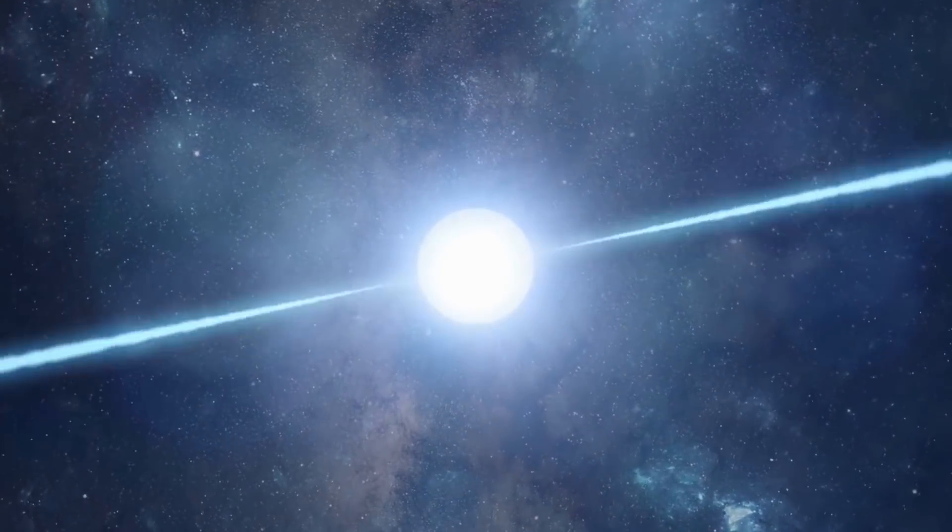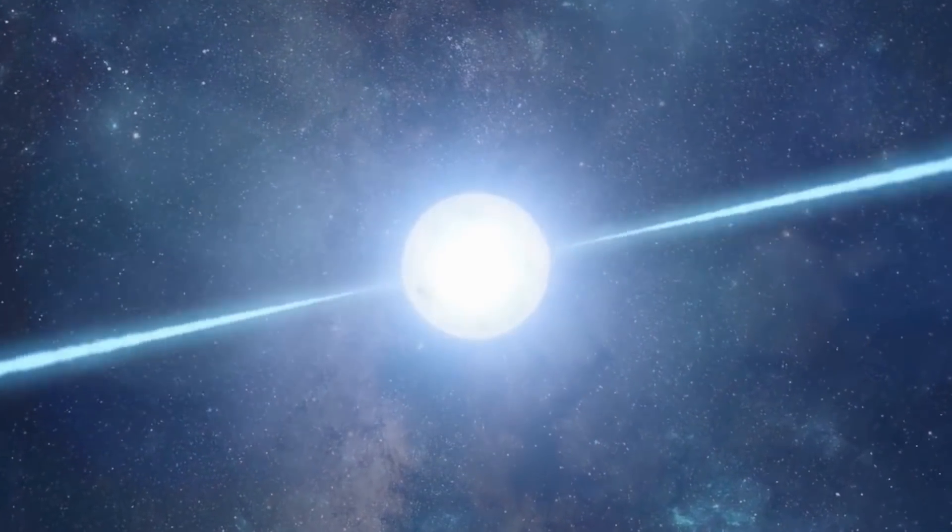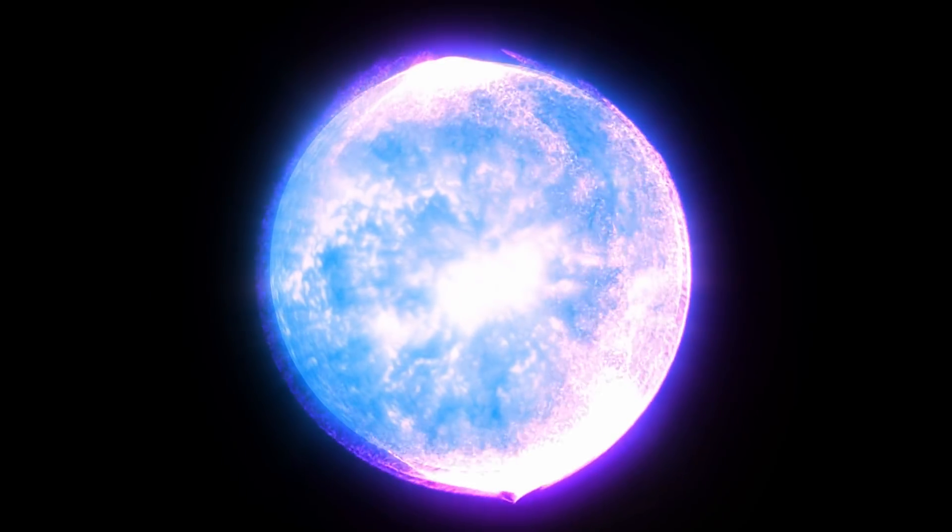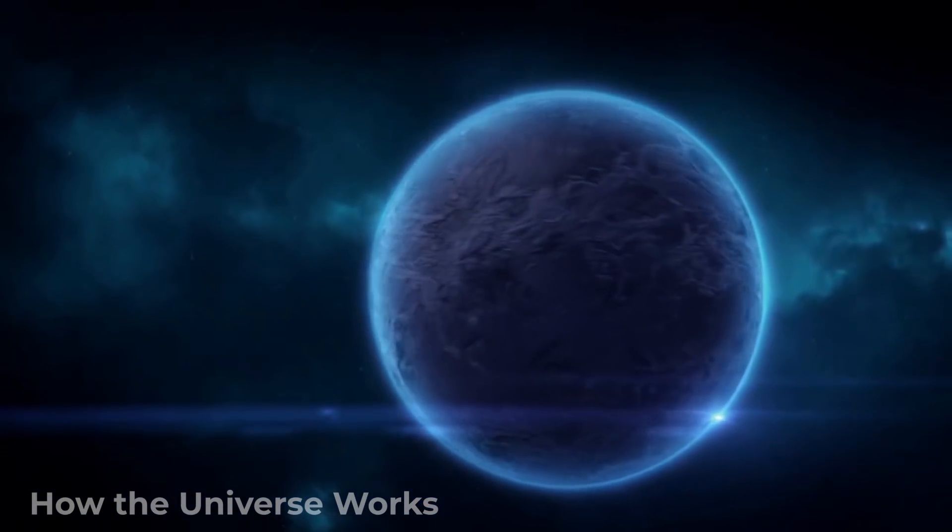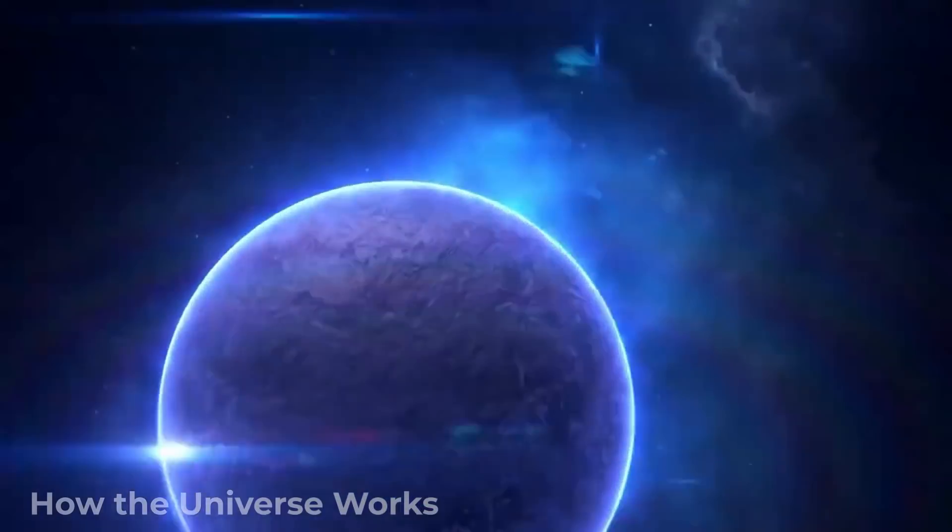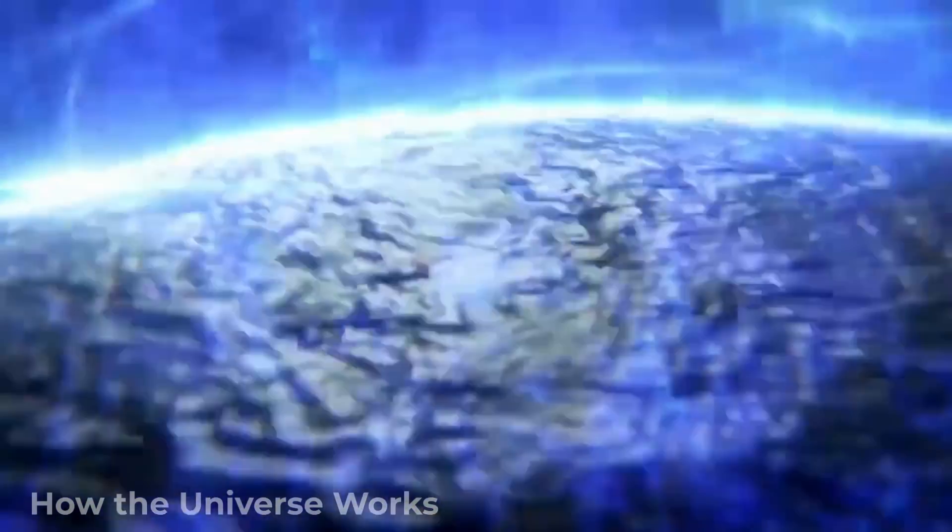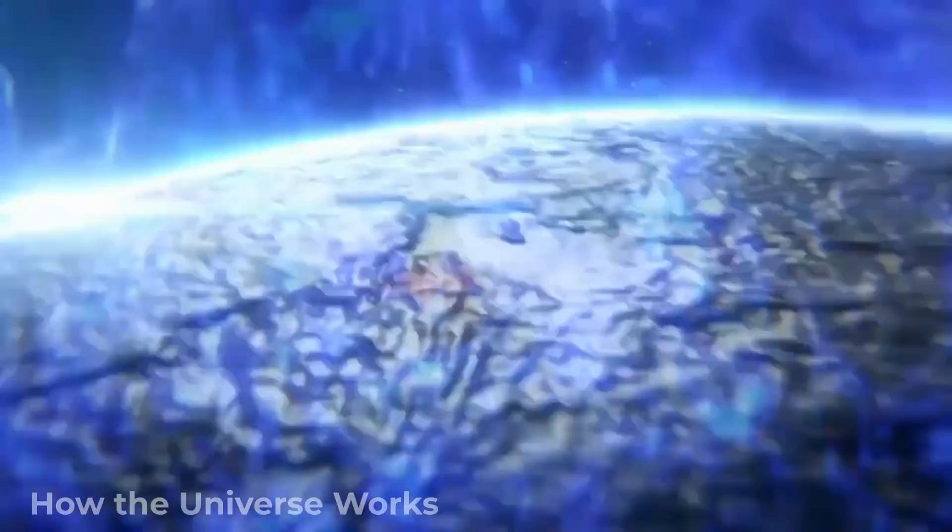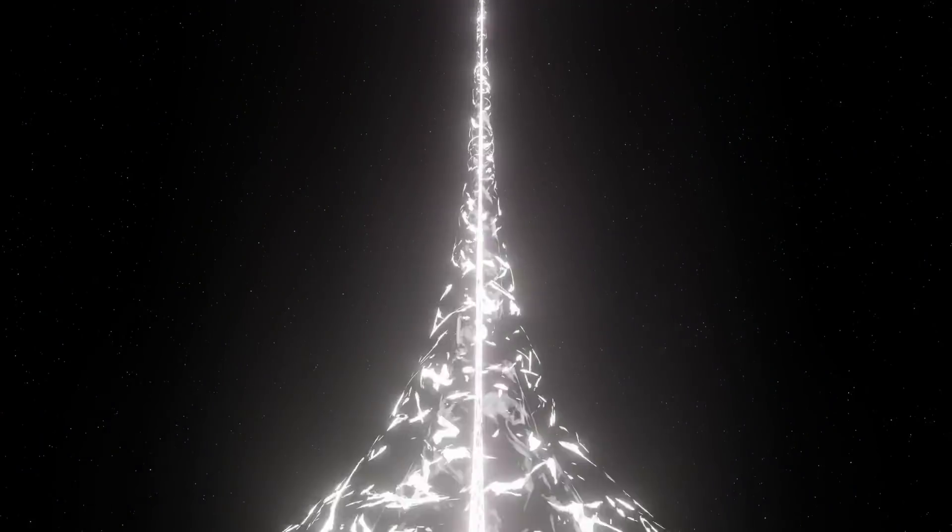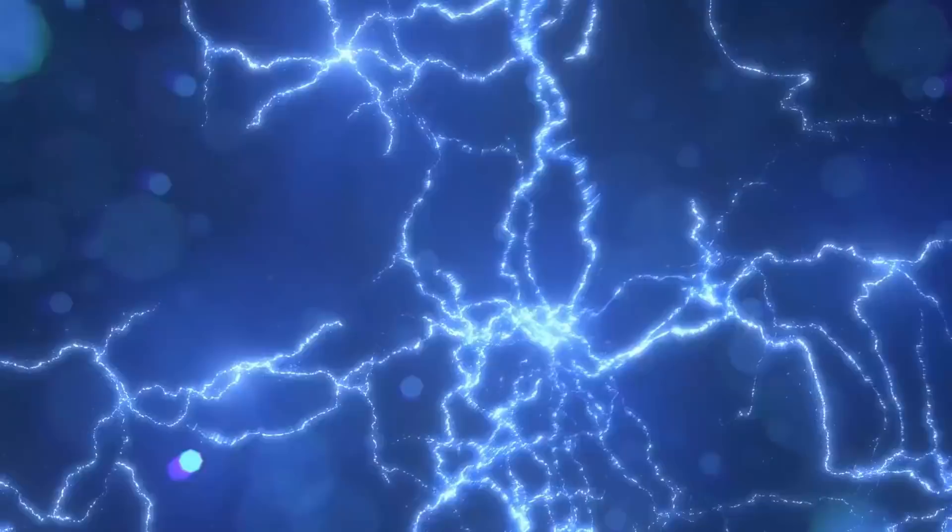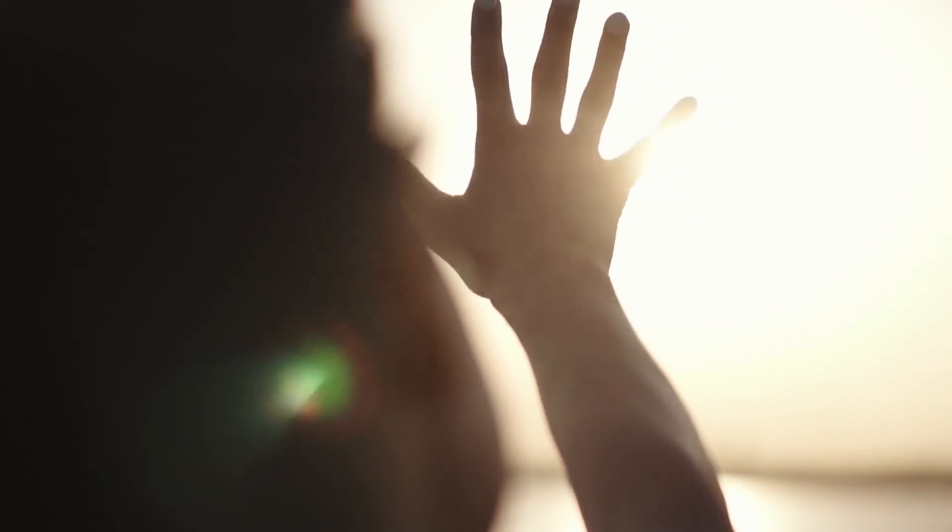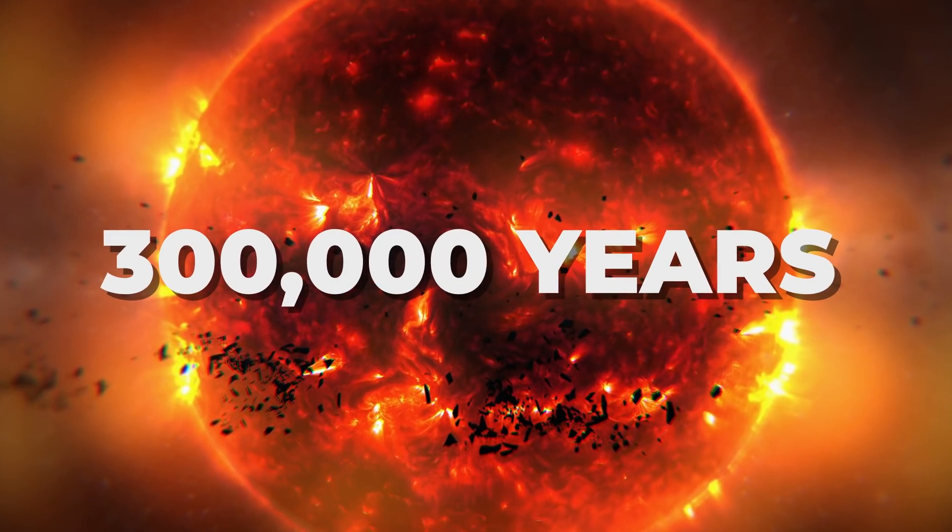Remember when we said that the crust of a neutron star is very hard yet also very thin? Well, right below its surface lies the sort of power we can't even imagine. Under intense pressure, the outer shell of a neutron star could crack. And if it does, a powerful flash of radiation would occur. A single flash from a compromised neutron star could create as much energy as our Sun produces in 300,000 years.